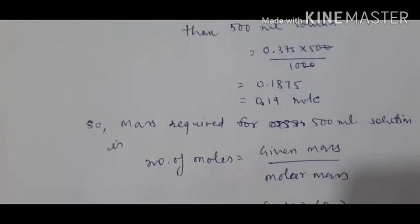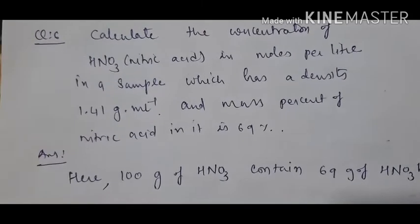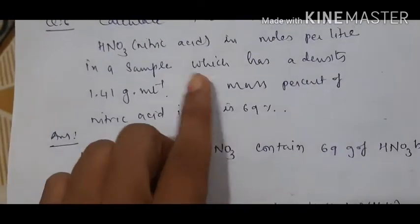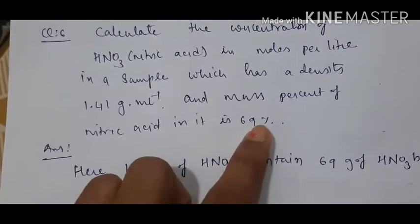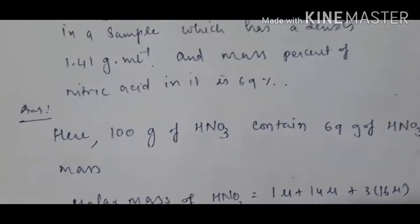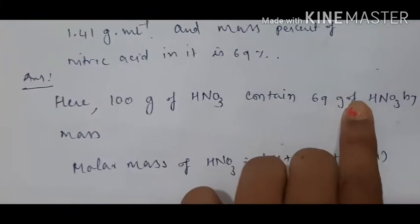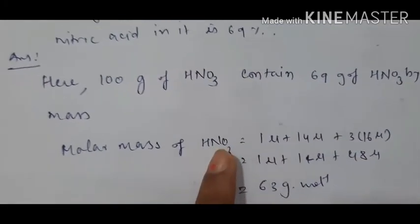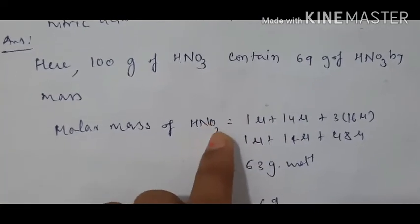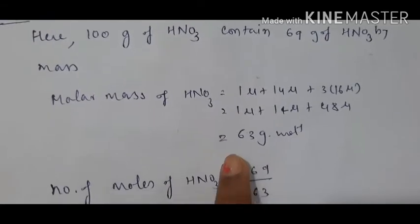Question number six is related with concentration, that is molarity. Molarity equals number of moles dissolved in the solution per liter. Given: HNO3 (nitric acid) at 69% concentration. For 100 grams of HNO3 solution, 69 grams is HNO3 by mass. Molar mass of HNO3: hydrogen = 1 unified mass, nitrogen = 14 unified mass, three oxygen atoms = 3 into 16 = 48. Overall molar mass equals 63 grams per mole.